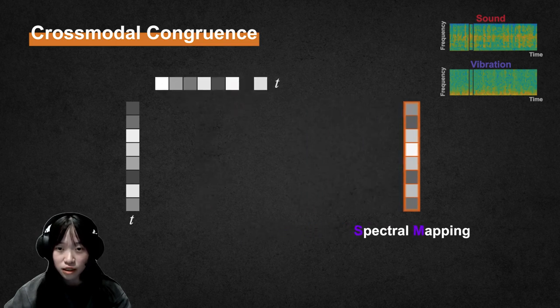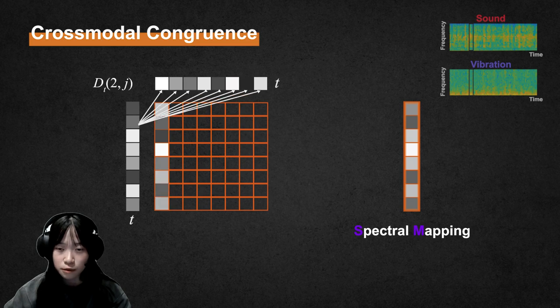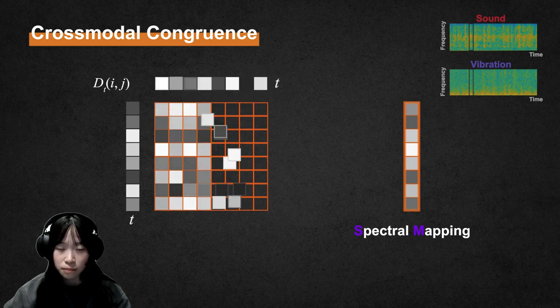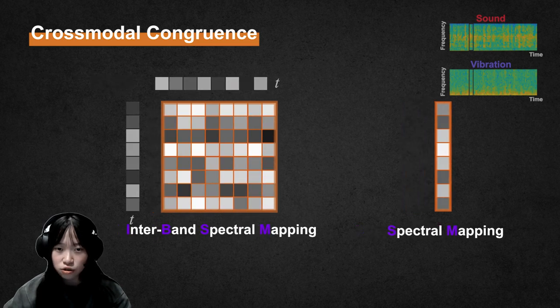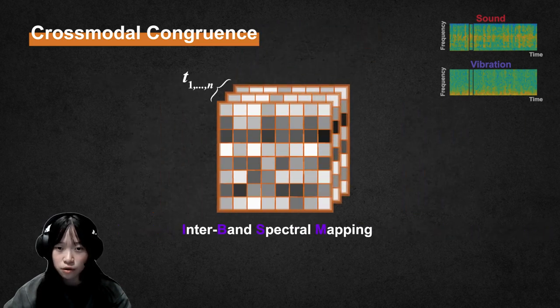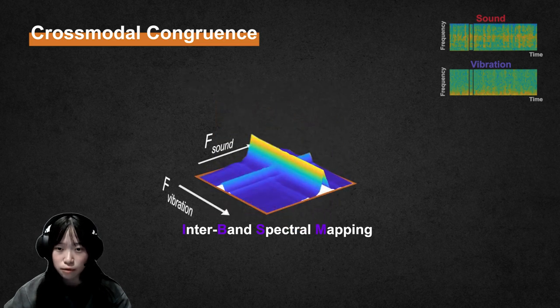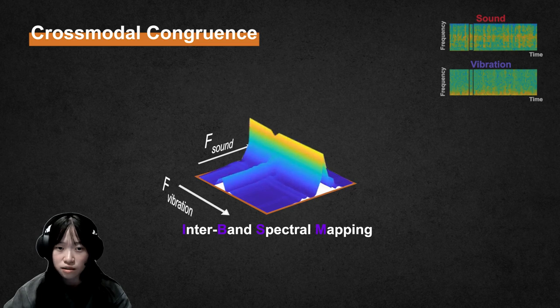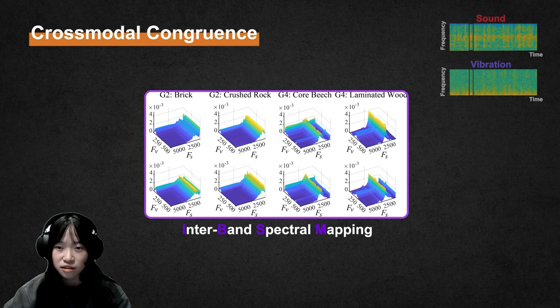Instead, at the current time step, we compare the frequency components between sound and vibration across the frequency bands to realize a two-dimensional representation of congruence named interband spectrum mapping. This 2D representation is averaged over all time steps to compensate for scan time parameters, and it conveys the interplay of touch-produced sound and vibration in the frequency domain. Its surface blocks show large variance between textures but high similarity within the same category.